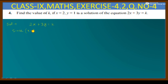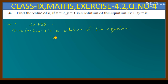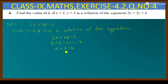Since x is equal to 2 and y is equal to 1 is a solution of the equation 2x plus 3y is equal to k, therefore we can write: 2 into 2 plus 3 into 1 is equal to k. That gives us 4 plus 3 is equal to k, or 7 is equal to k.